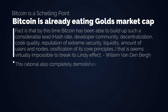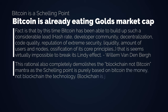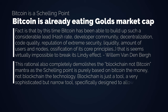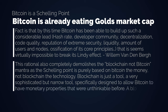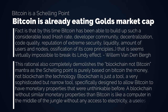This rationale completely demolishes the 'blockchain not bitcoin' mantra, as the Schelling point is purely based on Bitcoin the money, not blockchain the technology. Blockchain is just a tool — a very sophisticated but narrow tool specifically designed to allow Bitcoin to have monetary properties that were unthinkable before. A blockchain without similar monetary properties to Bitcoin is like a computer in the middle of the jungle without any access to electricity — a useless piece of junk.